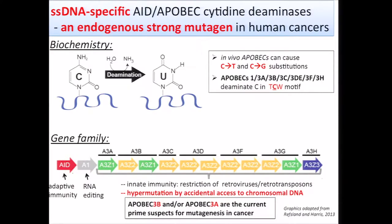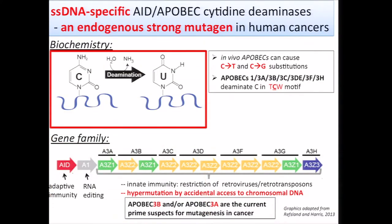This was established over the last two or three years by our and others' group's efforts. The biochemistry of these mutagens is very simple: these enzymes remove an amino group from cytosine in single-strand DNA, create uracil, and after some DNA repair and replication reactions, it leads to C-to-T and C-to-G mutations. This happens in cytosines preceded by thymine and followed by adenine or thymine — the TCW motif.